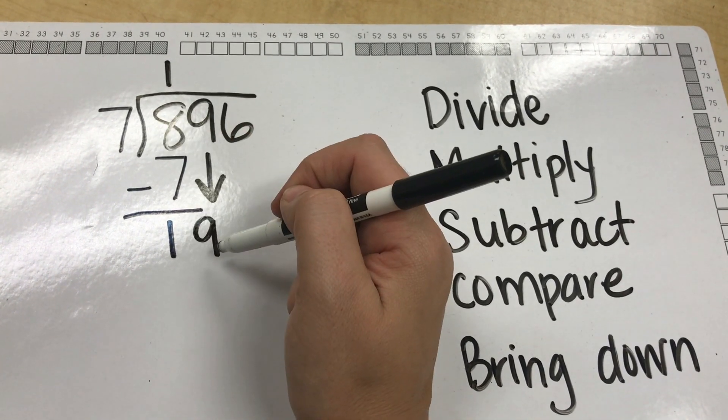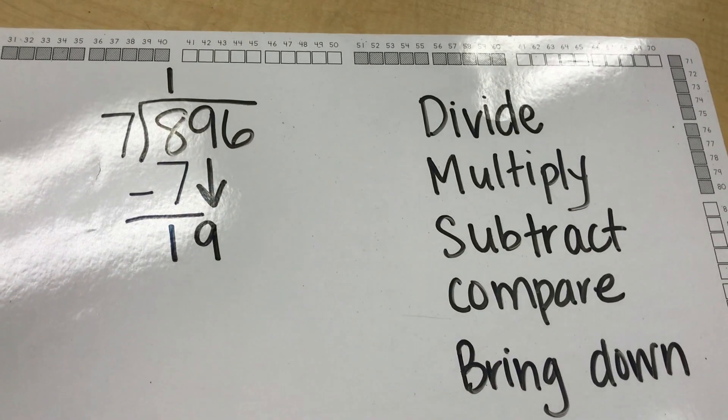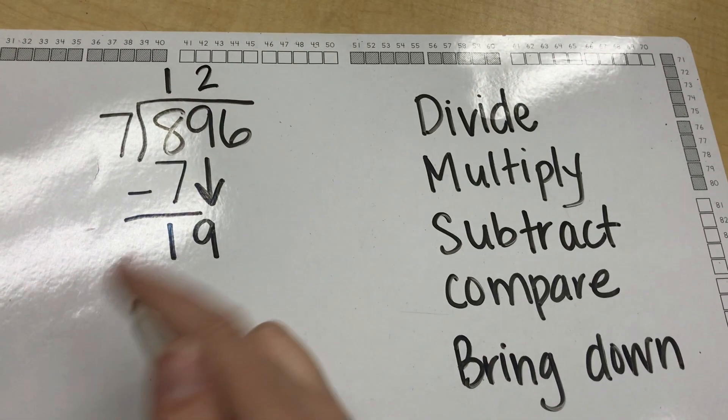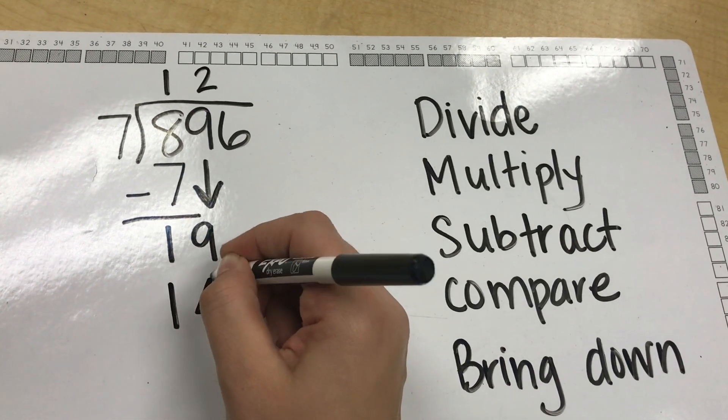I now divide 19 by 7 and I know that if I multiply 7, our second step here, by 2 I'm going to get 14 which comes pretty close to 19.